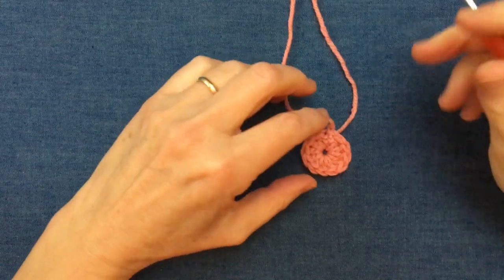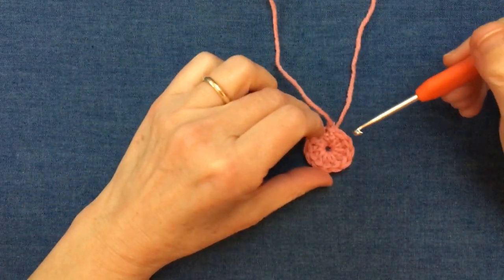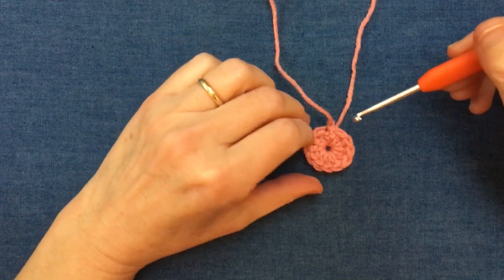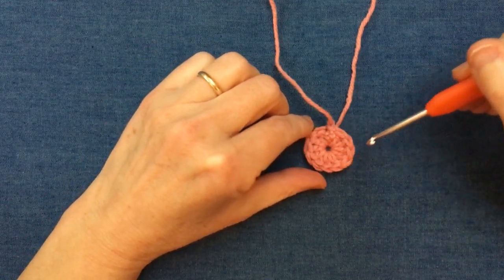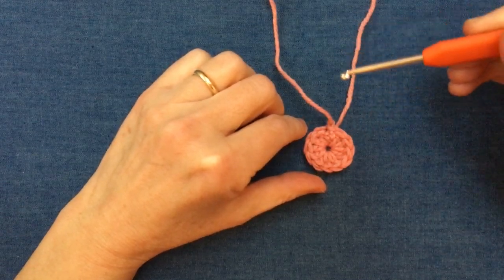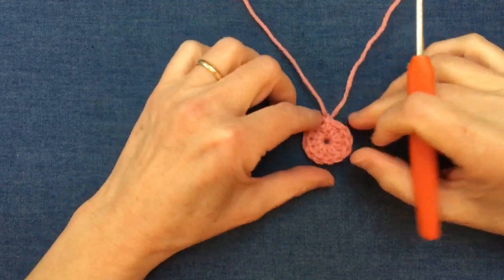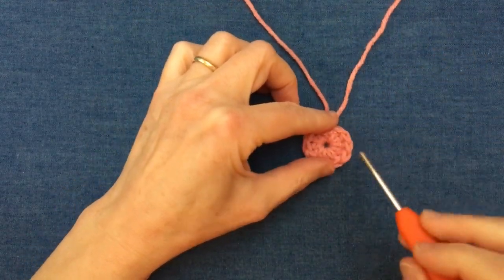When beginning any project in the round, the conventional way of starting is to begin by making a foundation or base chain and joining that with a slip stitch to make a ring, and then working your first set of stitches into that ring. That's a very straightforward way of beginning any project and you generally end up with this hole in the middle.